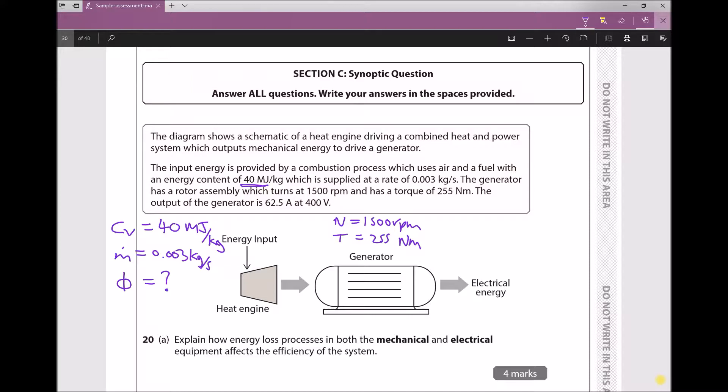So we're building up a picture here because we can calculate how much energy is being supplied to the heat engine, how much mechanical energy is being provided by the generator as it rotates, and then it also gives us information about the output. We have an electrical output of 62.5 amps and 400 volts. Therefore the current I is 62.5 amps and the output voltage is 400 volts.